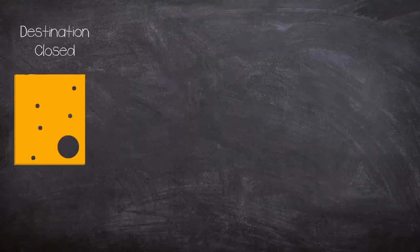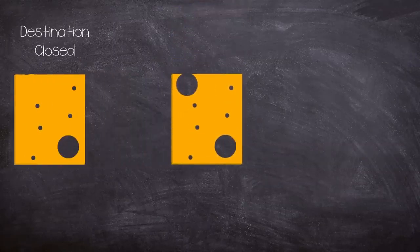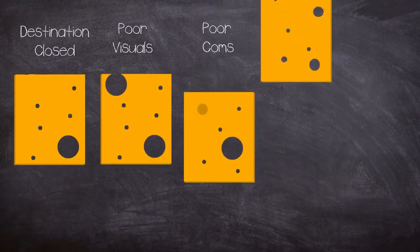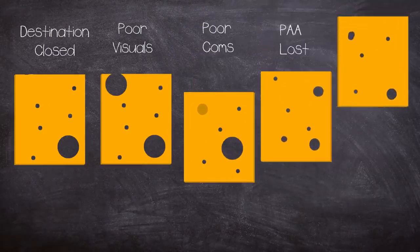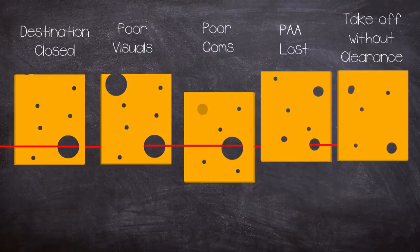Multiple failures lined up at Tenerife, which each individual one wouldn't have resulted in the crash, but when each hole was matched the outcome was inevitable.